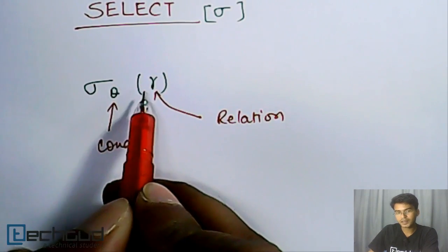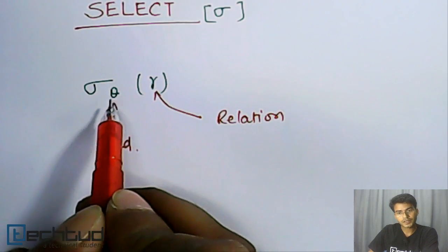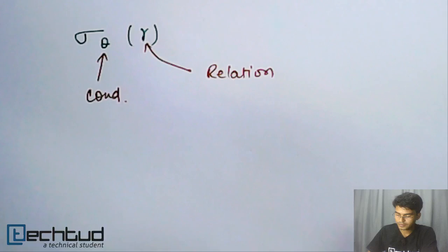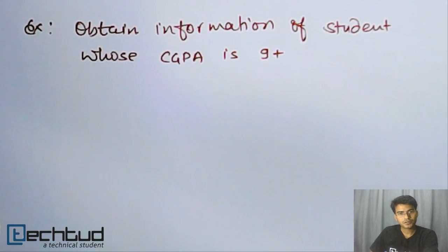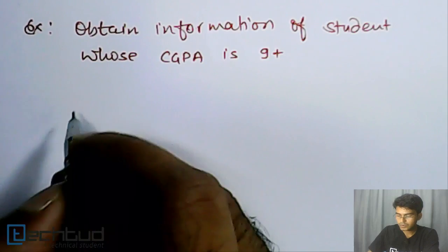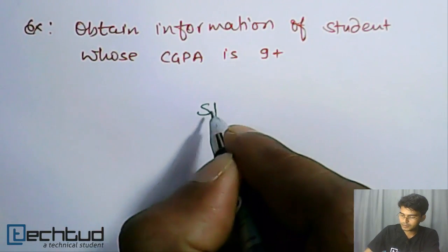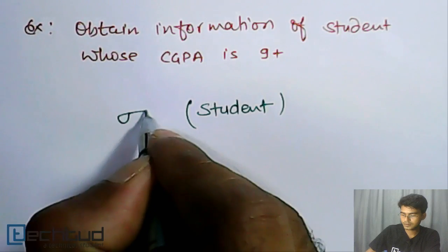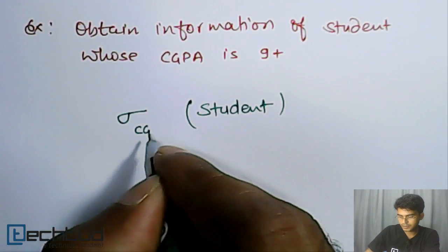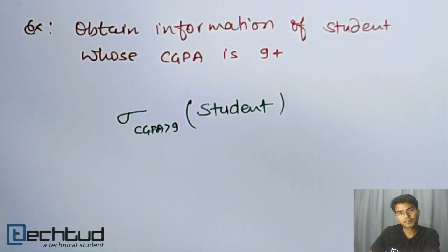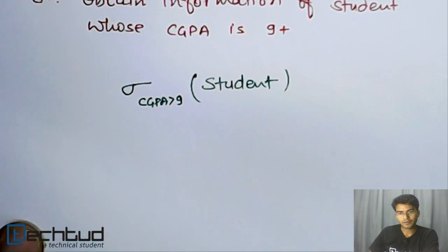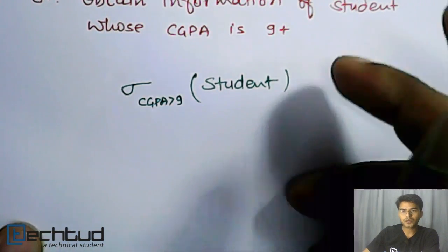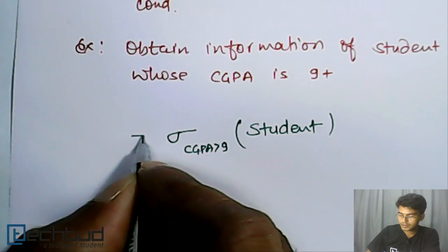Let's write an example: obtain information of students whose CGPA is greater than 9. So from the student table, that is the student relation, we select where CGPA is greater than 9. This is our required relational algebraic expression.